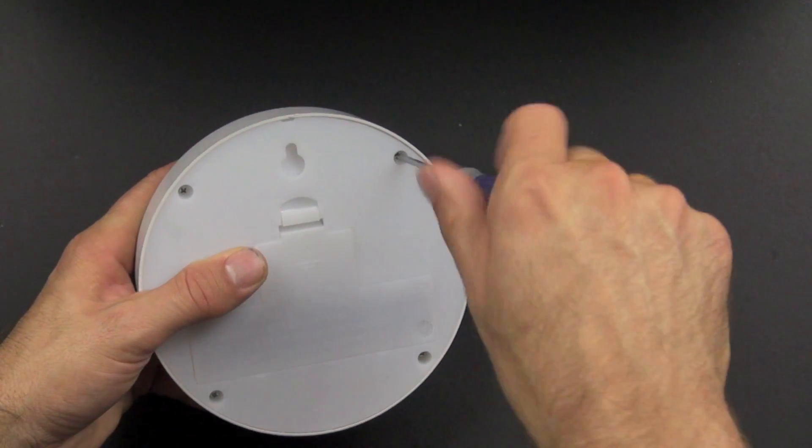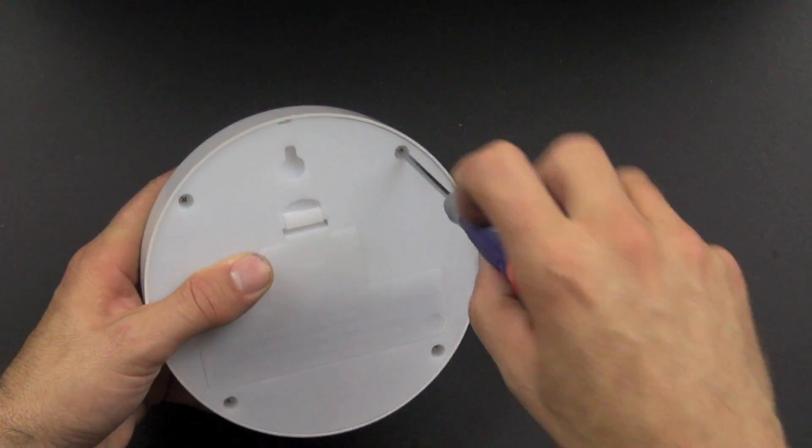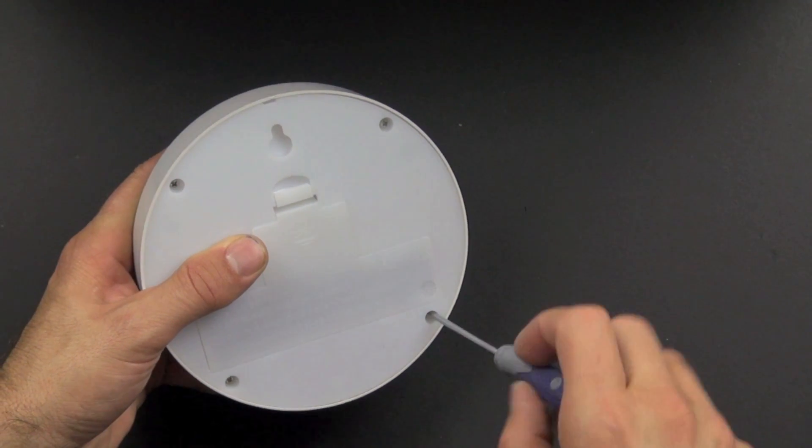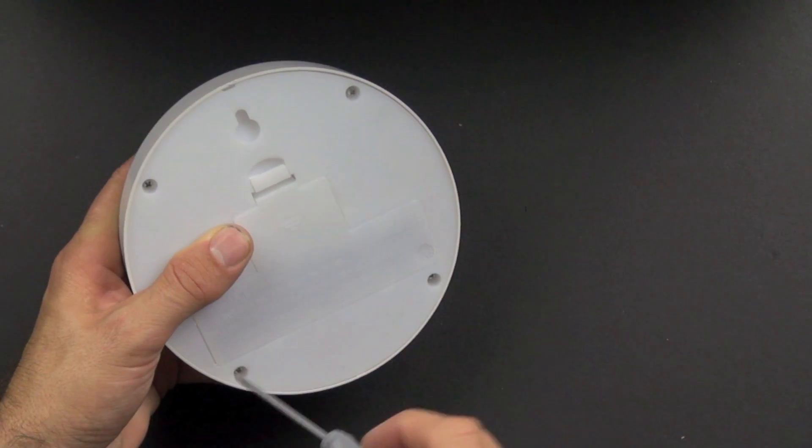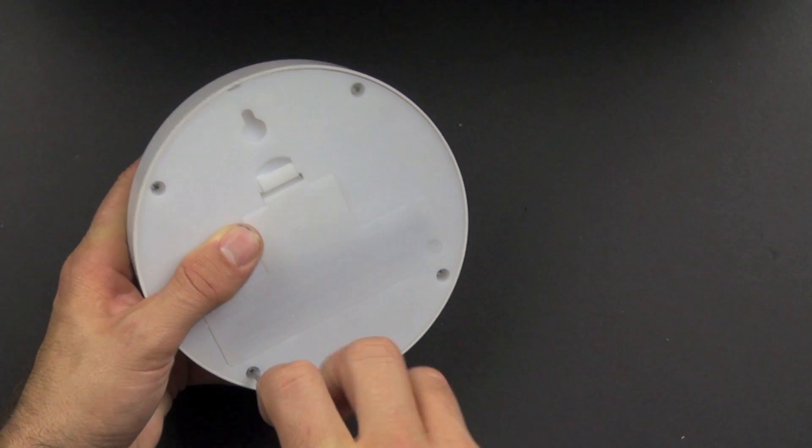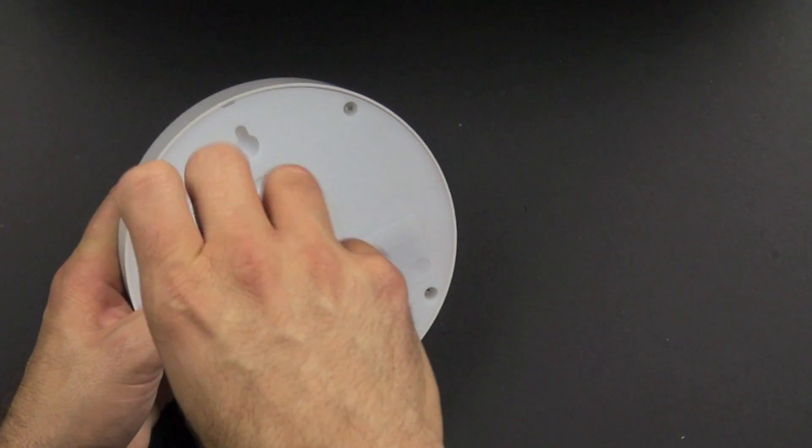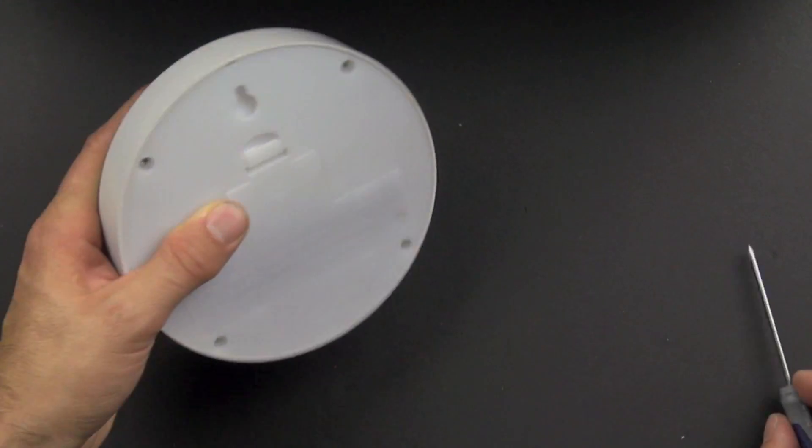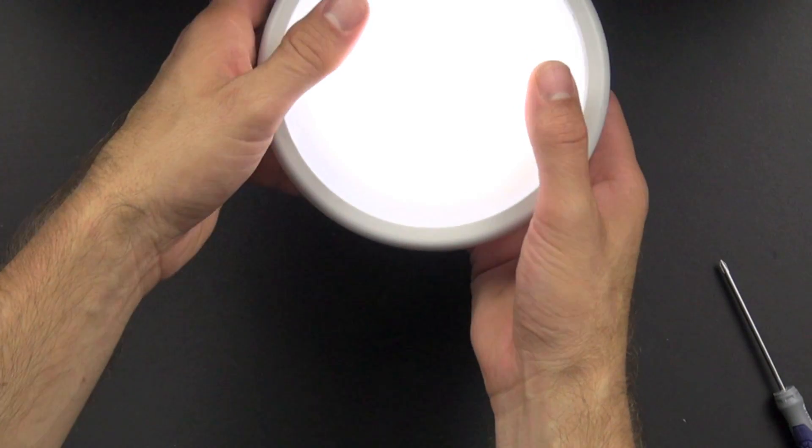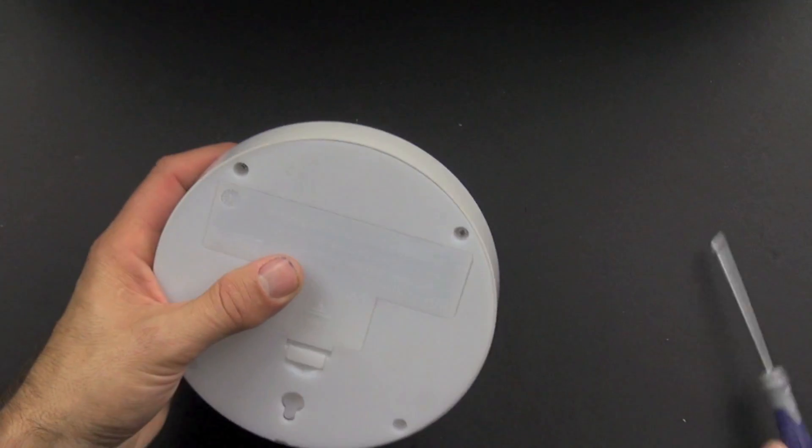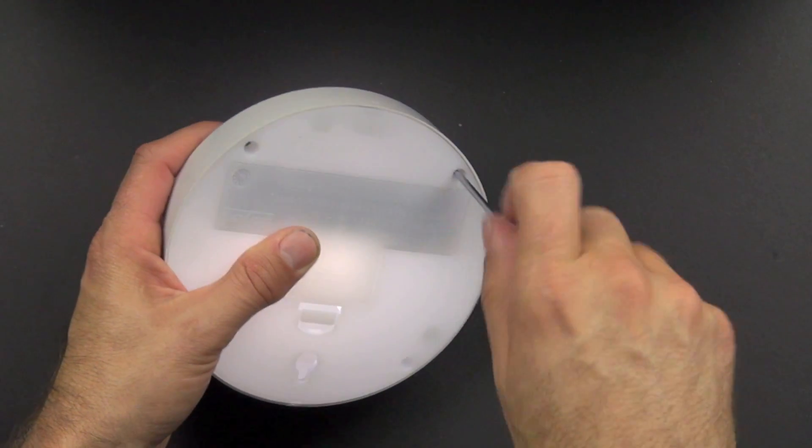So we're going to go ahead and take the screws out. There's just looks like four screws. These are Phillips head screws and they are zinc coated steel. Take those out. All right, we've got a couple of them out. There's still two left here.